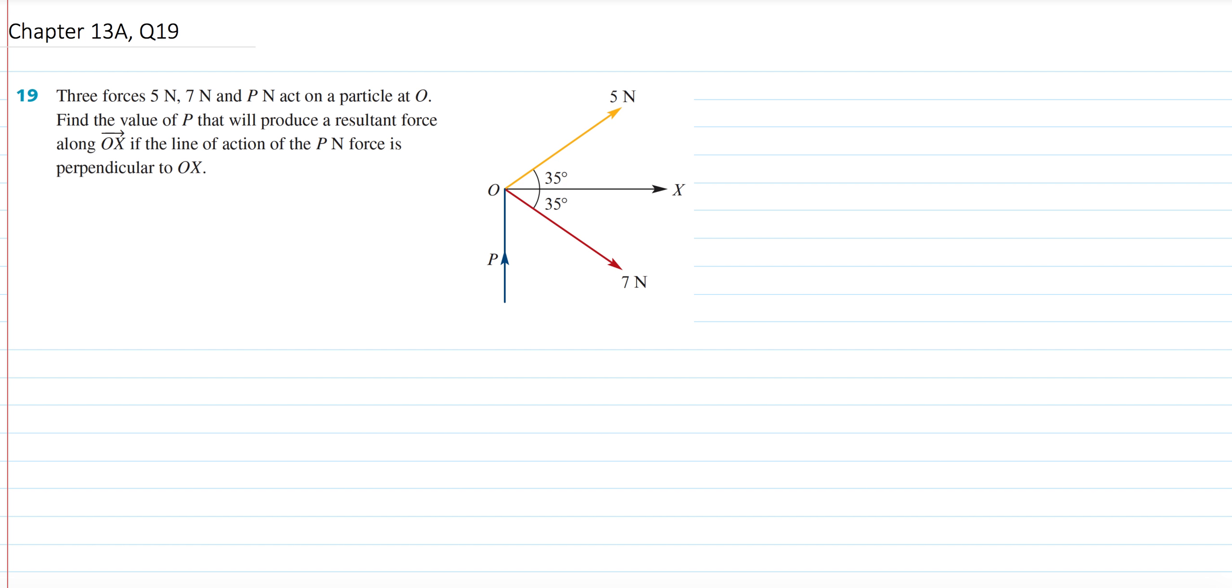So 13a, last question, let's have a go. Question 19, you have three forces, 5N, 7N, and PN, all in the diagram right here, acting on a particle at the origin.